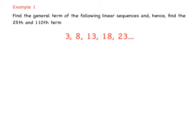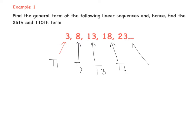Hello everyone. Today we will be looking for a rule for the general term of a linear sequence. Let's start with example number one. We have a linear sequence: 3, 8, 13, 18, 23, and so on. So 3 is term 1, 8 is term 2, 13 is term 3, 18 is term 4, and 23 is term 5.